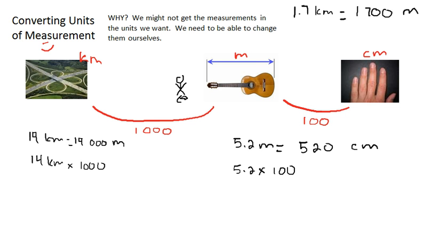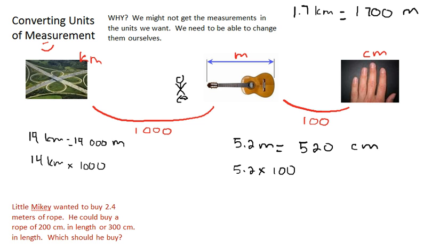Let's try a bit of a word problem here. Little Mikey wanted to buy 2.4 meters of rope. He could buy a rope of 200 centimeters in length, or 300 centimeters in length - which should he buy? Let's extract the data right away: 2.4 meters of rope he needs, and he can only buy in 200 centimeters or 300 centimeters.